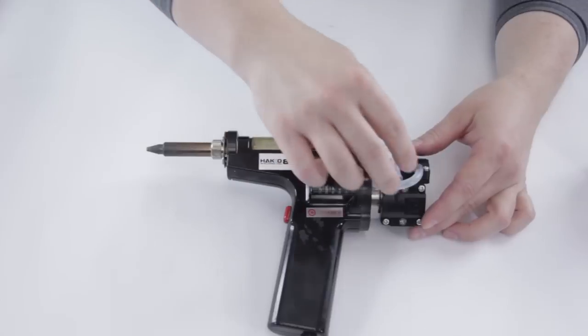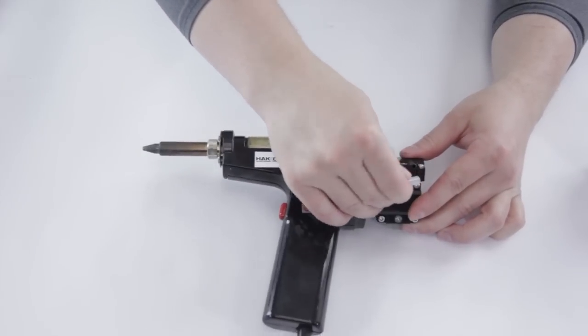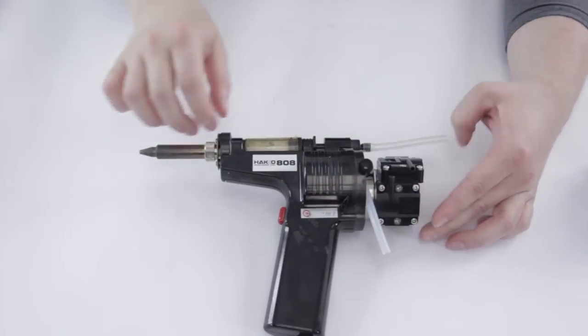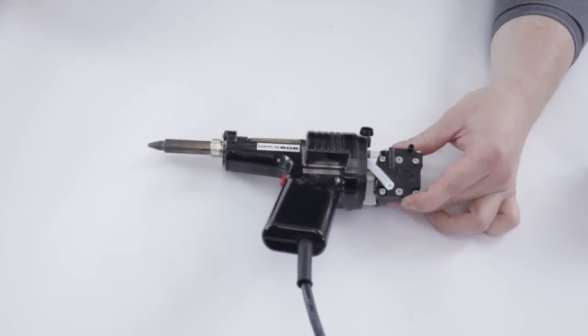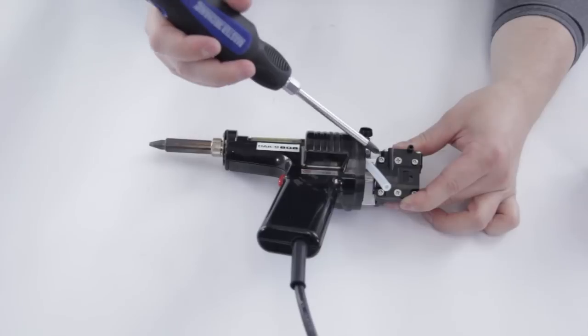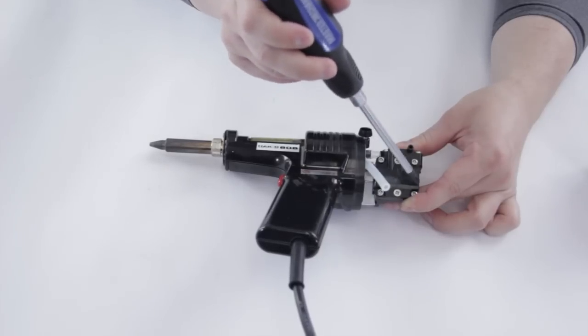First step is to undo the tubes right here. You just pull off. Once you've got those out of the way, we can now get access to the screws. We want to unscrew the four corner screws first.